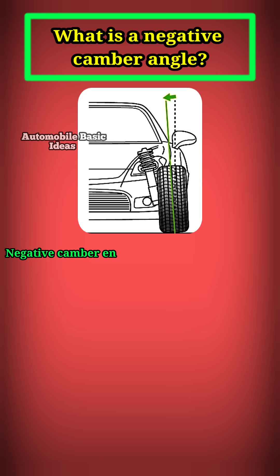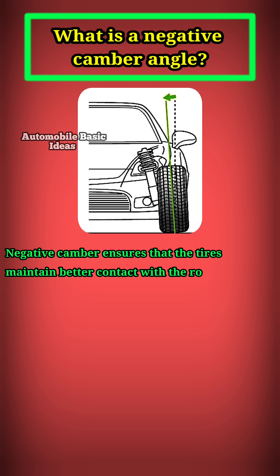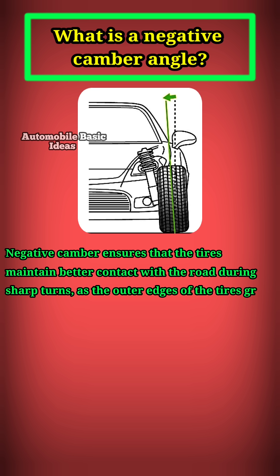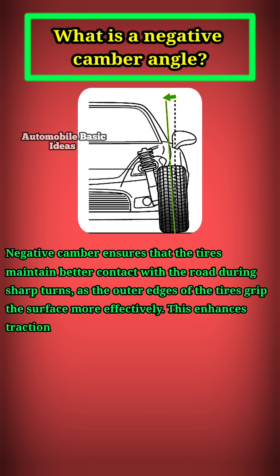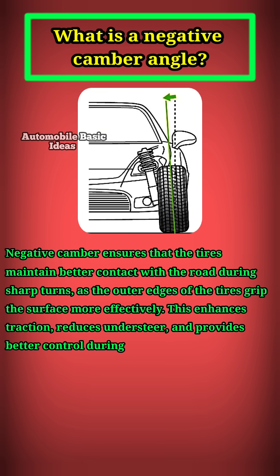Negative camber ensures that the tires maintain better contact with the road during sharp turns, as the outer edges of the tires grip the surface more effectively. This enhances traction, reduces understeer, and provides better control during high-speed maneuvers.